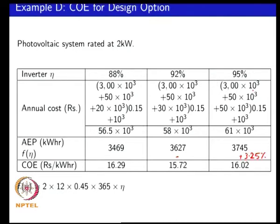A drawback with the cost of energy approach when doing such a design is that the differences between performance metrics is really small. You are trying to make use of a power electronic design, but the power electronic numbers are buried by the larger numbers of the overall system. The differences appear to be quite small from a cost of energy perspective. The cost of the power converter is actually a small fraction of the overall system cost. But you can see another factor: the 95 percent efficient unit produces about 3.25 percent more energy, which means you could reduce the size of the panel by 3 percent — and the panel cost is quite significant.